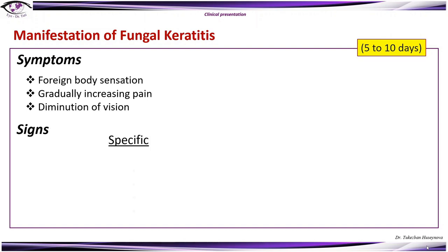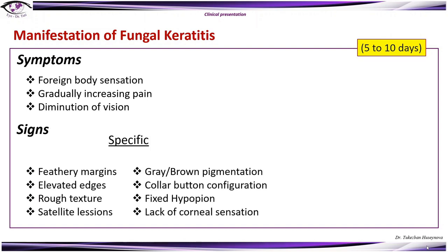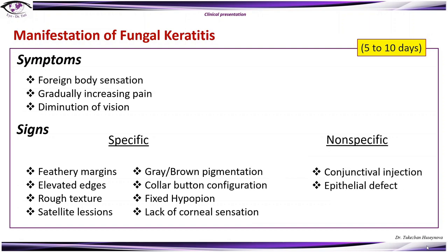Specific signs include feathery margins, elevated edges, rough texture, satellite lesions, gray-brown pigmentation, collar button configuration, fixed hypopyon, and lack of corneal sensation. Non-specific signs include conjunctival injection or epithelial defect.